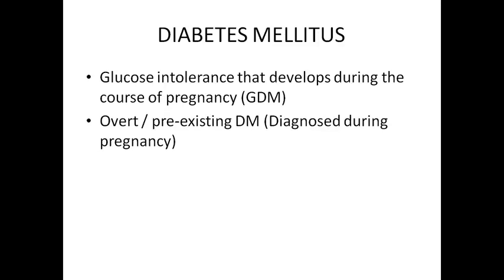Gestational diabetes mellitus includes glucose intolerance that develops during the course of pregnancy, as well as diabetes that was present prior to pregnancy but is being diagnosed during pregnancy. The latter is called overt or pre-existing diabetes mellitus. Both conditions — glucose intolerance that either develops or is diagnosed during pregnancy — fall under the same heading of gestational diabetes mellitus.